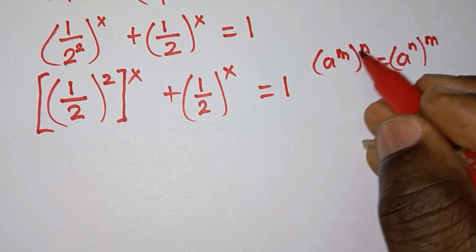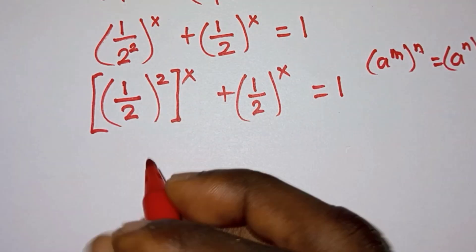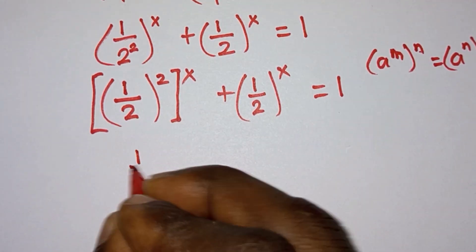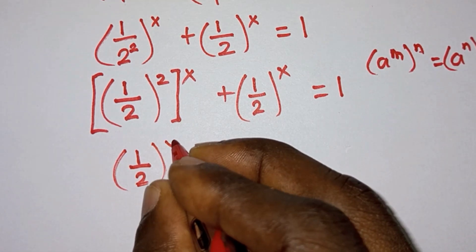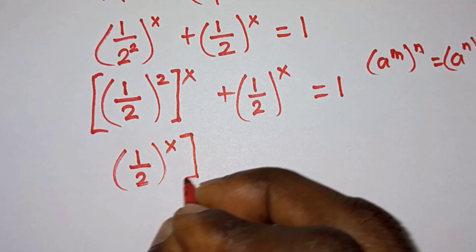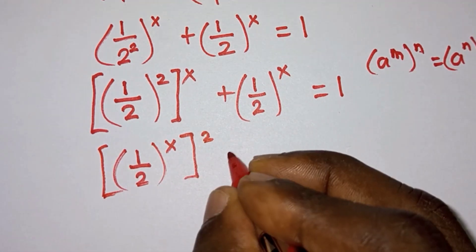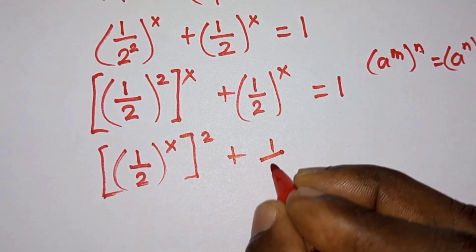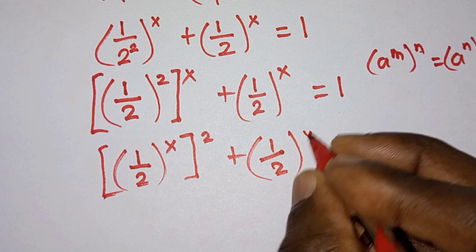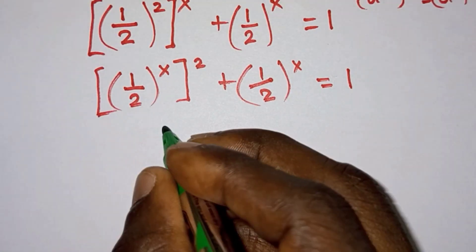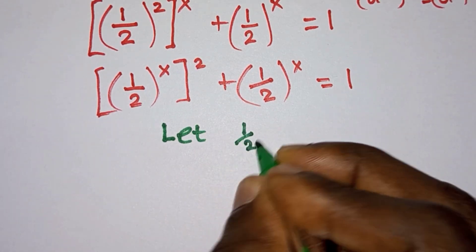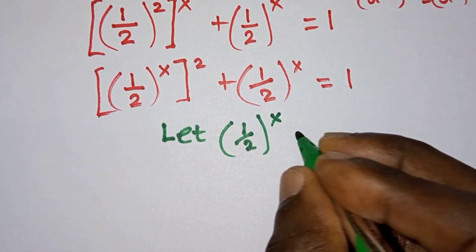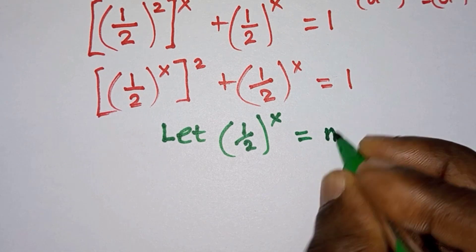So from here we are going to have (1/2)^(2x) plus (1/2)^x equals 1. Let (1/2)^x equal m.